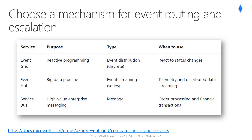Event Hubs is a big data pipeline. It facilitates the capture, retention, and replay of telemetry and event stream data. The data can come from many concurrent sources. Event Hubs allows telemetry and event data to be made available to a variety of stream processing infrastructures and analytics services. It is available either as data streams or bundled event batches. Characteristics include: low latency, capable of receiving and processing millions of events per second, and at least once delivery.